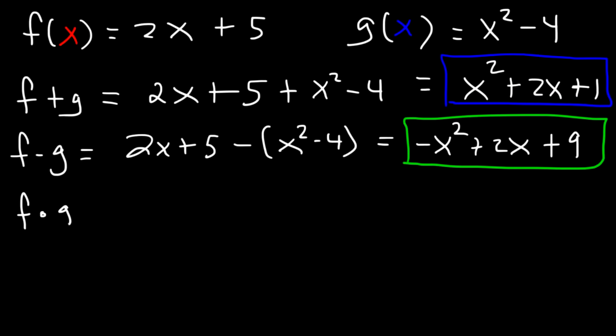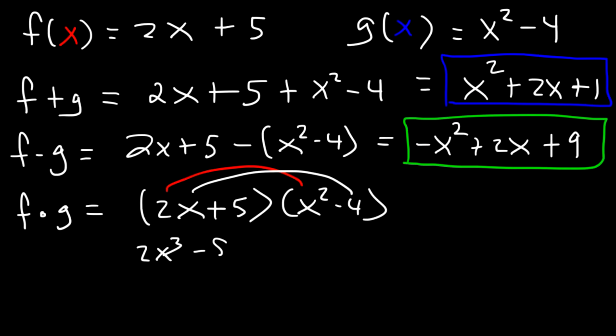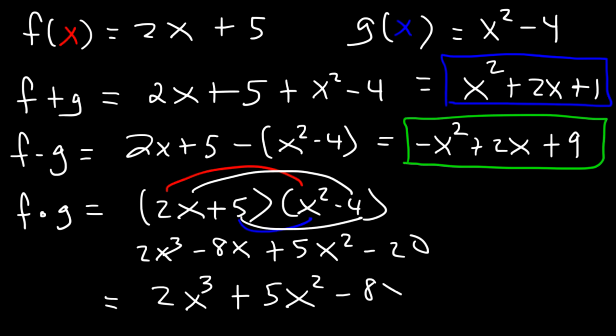Now what about f times g? This is just gonna be 2x plus 5 times x squared minus 4. And we can FOIL it. 2x times x squared that's 2x cubed and then 2x times negative 4 that's negative 8x. And then we have 5 times x squared that's 5x squared. And then 5 times negative 4 is negative 20. So in standard form it's 2x cubed plus 5x squared minus 8x minus 20.